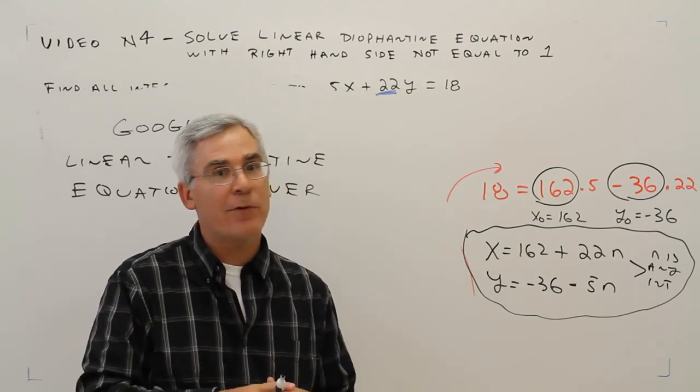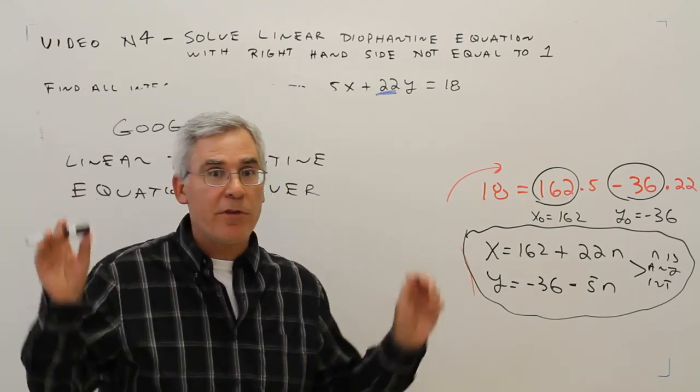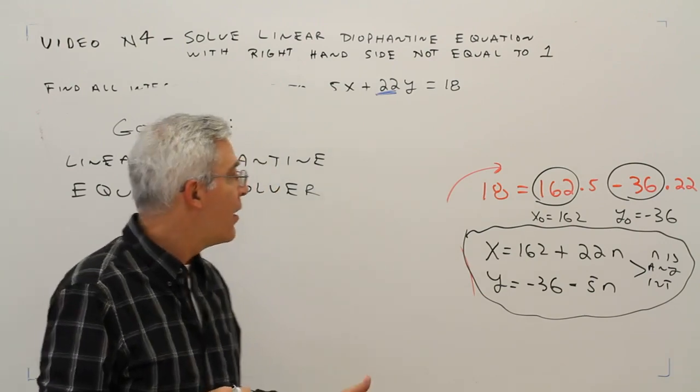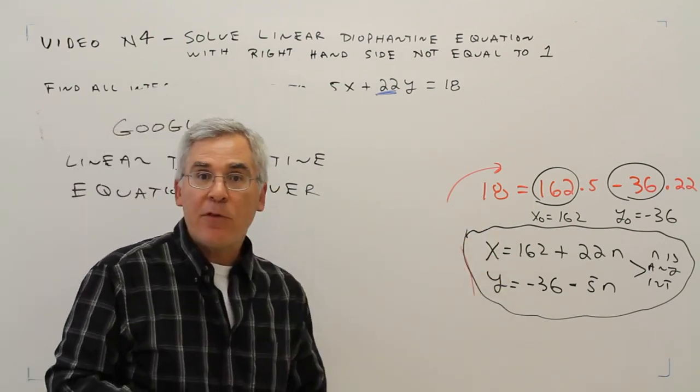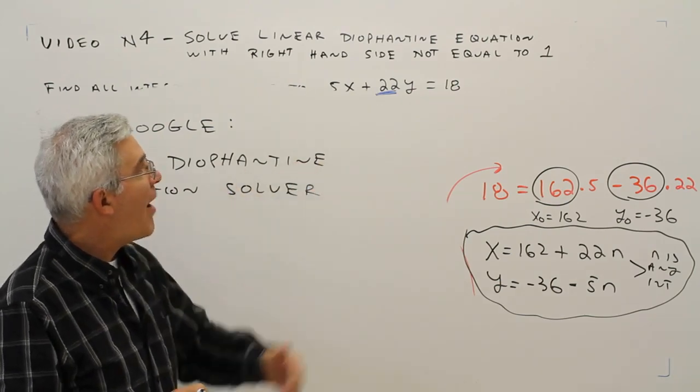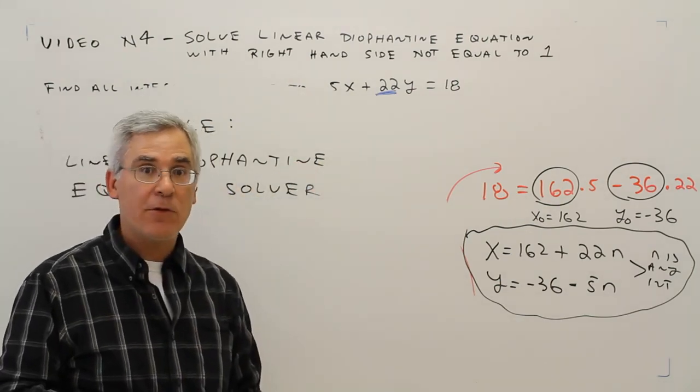There's usually online solvers for many of these, or you can even just google the topic. So there you have it: how to solve a linear Diophantine equation where the right-hand side is not equal to 1.